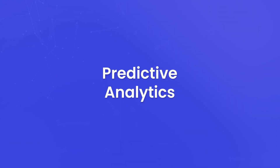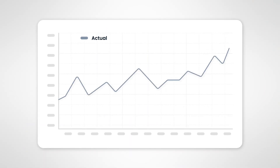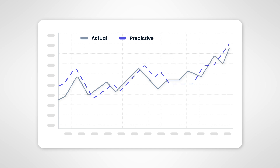Predictive Analytics. SAP Analytics Cloud offers predictive modeling capabilities that don't require advanced data science expertise. With these tools, you can forecast future trends, identify outliers, and make data-driven predictions. Imagine predicting sales trends, customer churn rates, or optimizing your inventory without needing a data scientist by your side.